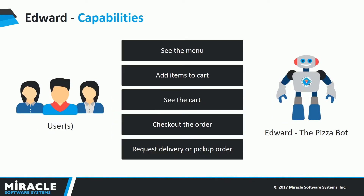A user can have a look at the menu, add products to the cart, view the cart, and checkout. They can either choose to pick up their order or get it delivered — all by just chatting with EDWORD.